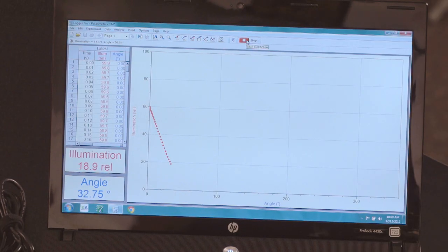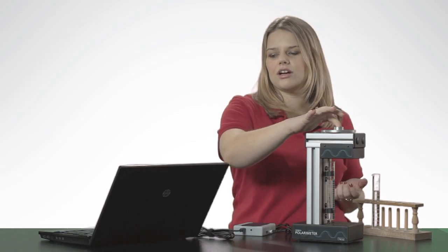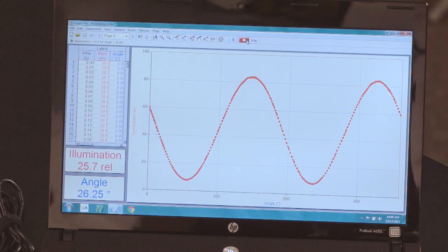After I've done that, I begin to rotate the analyzer, and a cosine squared waveform should appear on the screen.